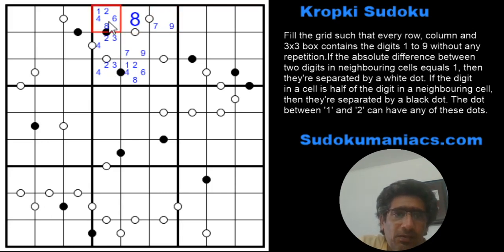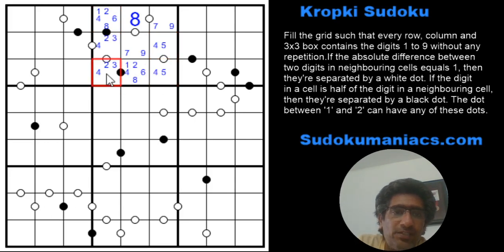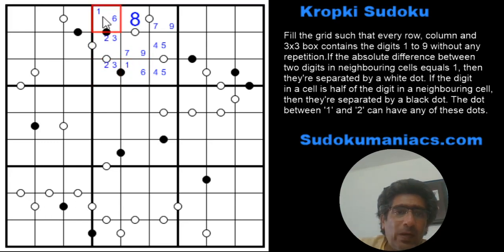The digit 5 in the box has to be one of these two cells. Since 6 is locked with the black dots, this can only be a 4 and a 5, which eliminates the 4 from those cells. And 8 will never be part of it because we already got the 8. So this becomes a pair of 2 and 3, giving me a pair of 1 and 6 here.